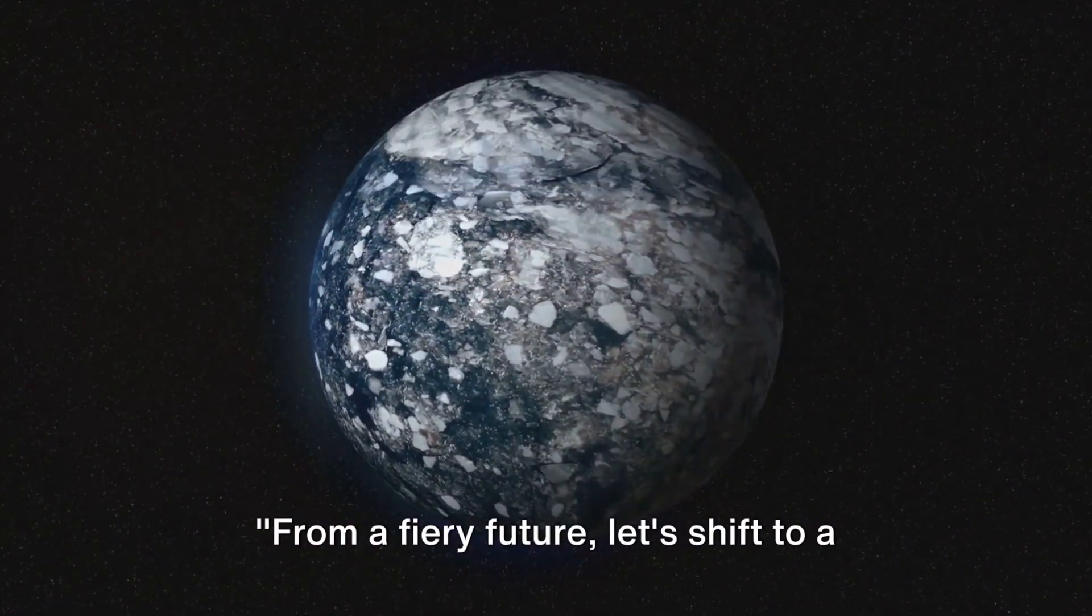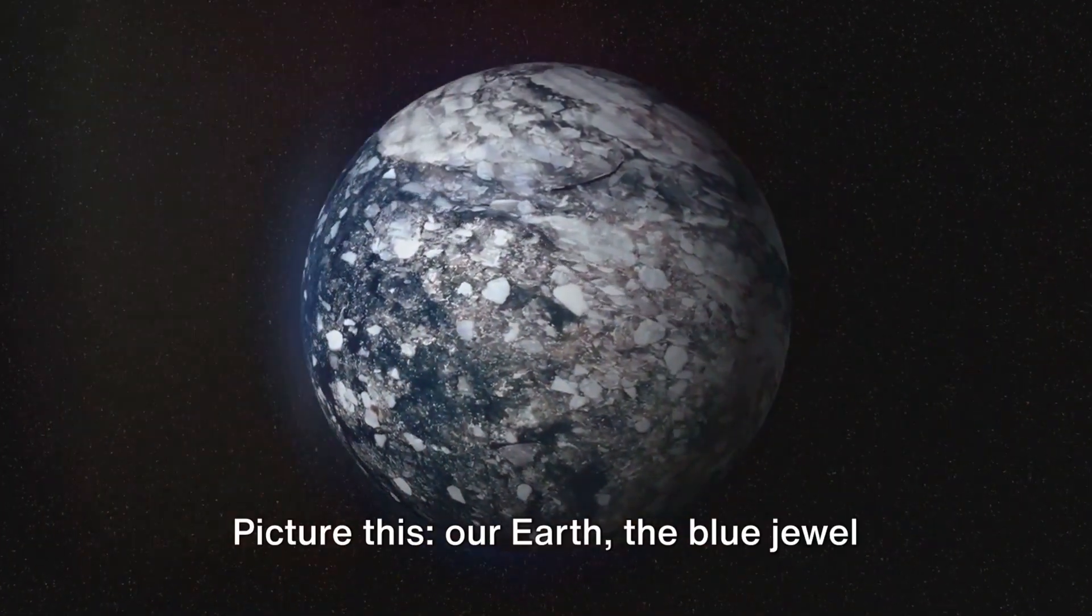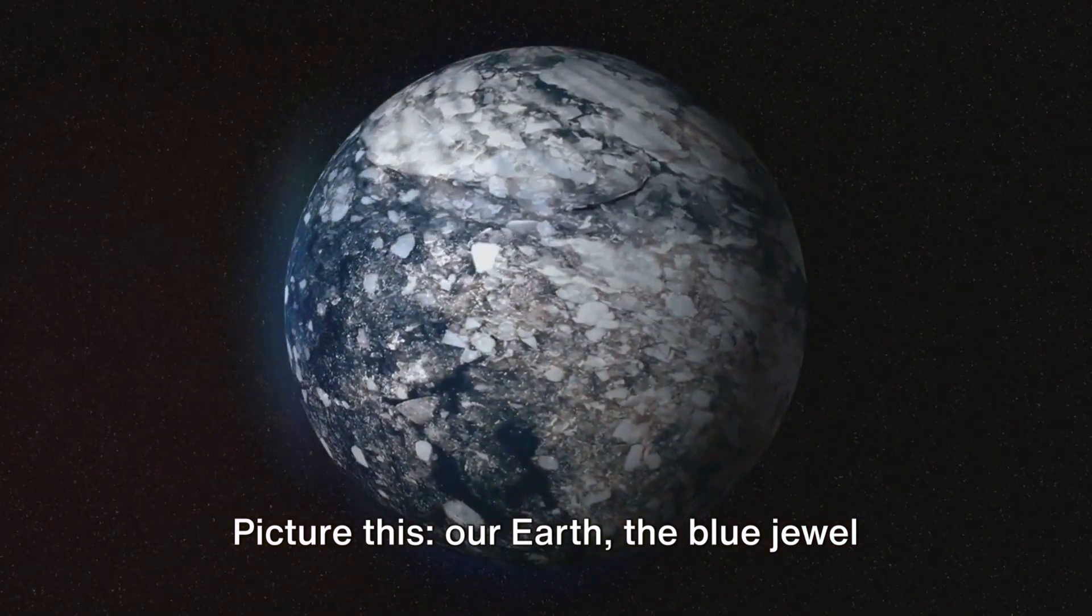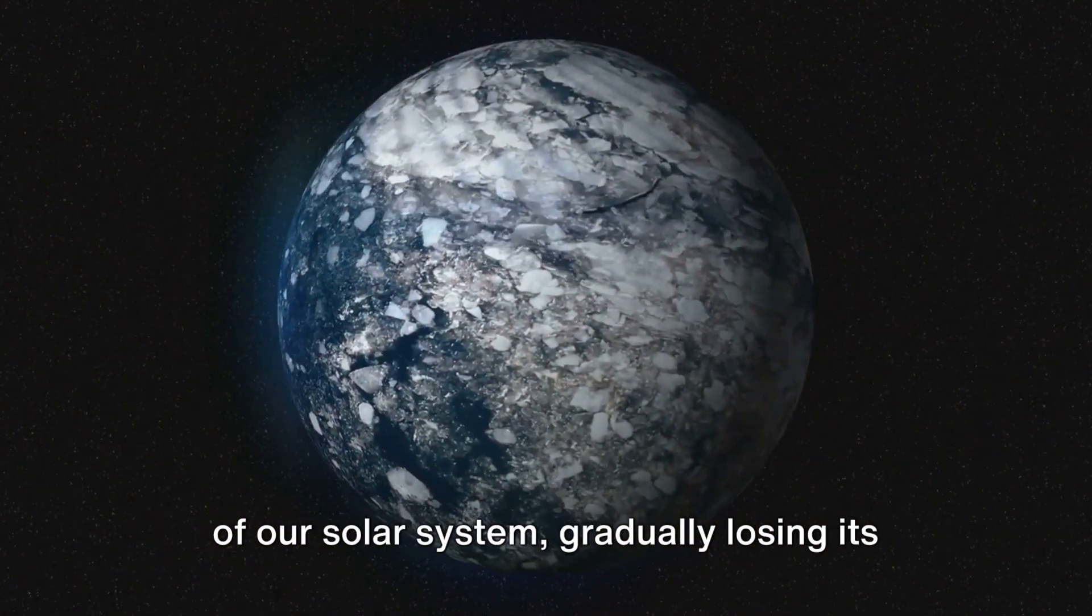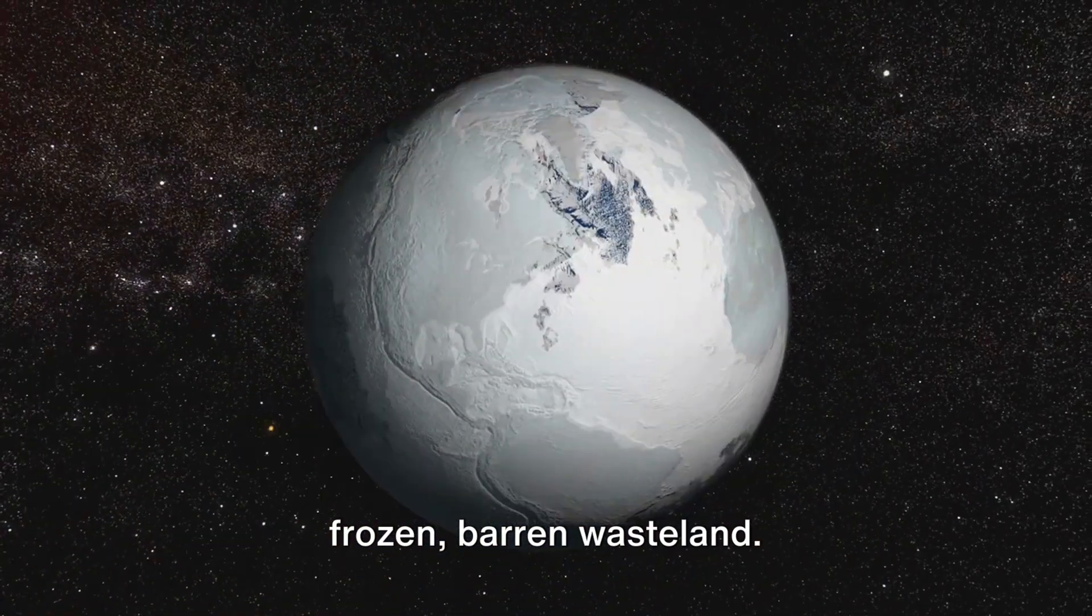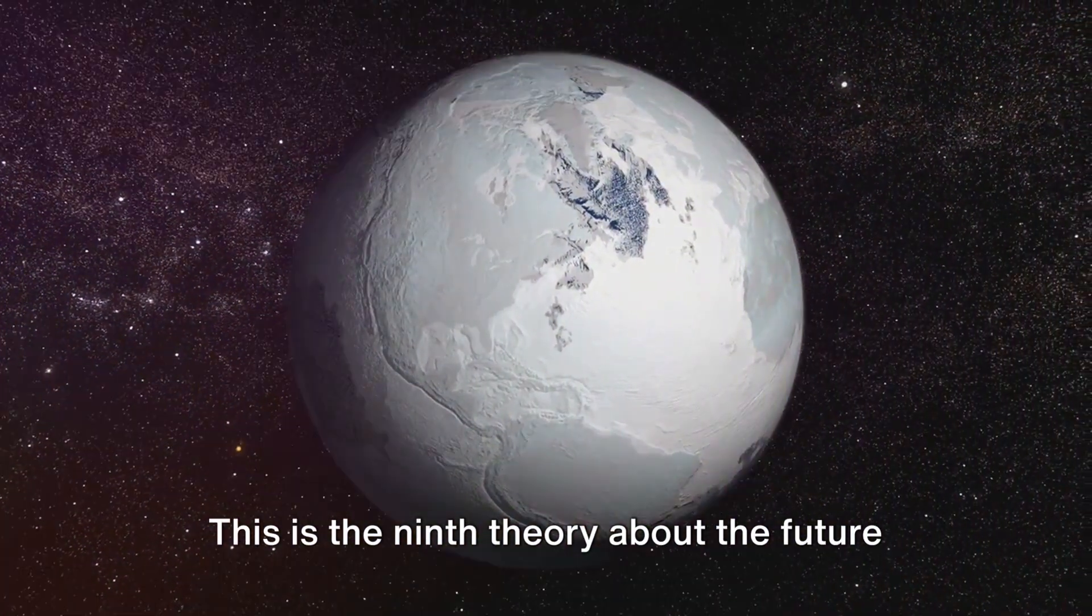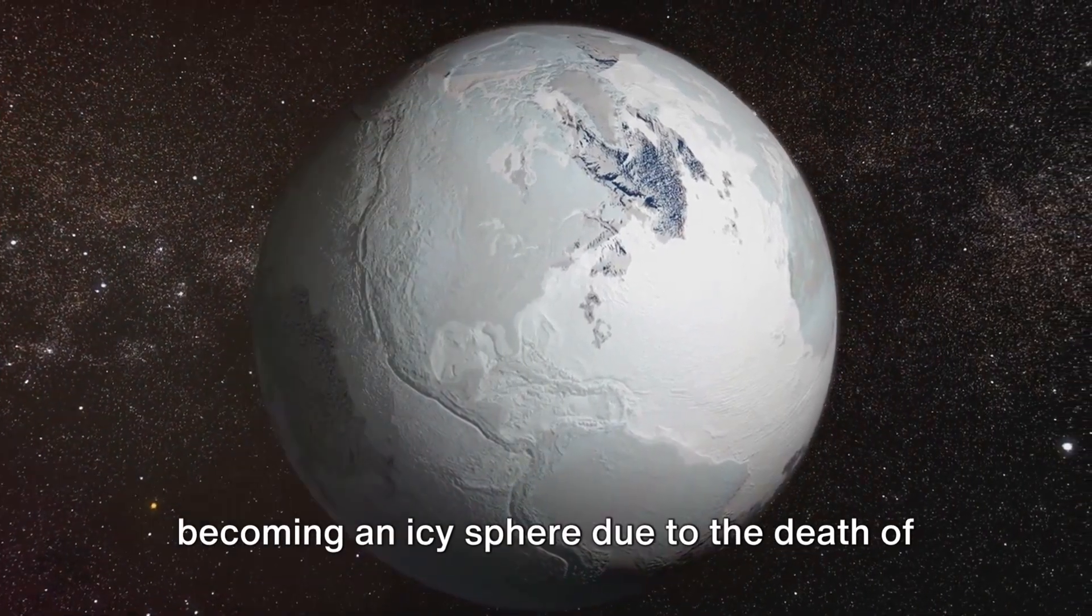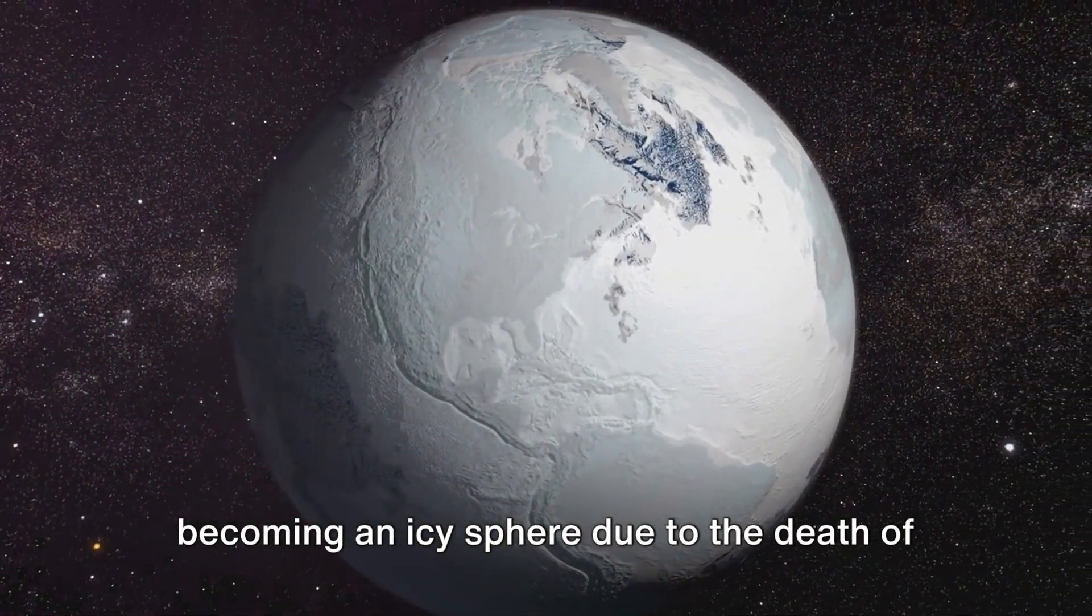From a fiery future, let's shift to a colder scenario. Picture this: Our Earth, the blue jewel of our solar system, gradually losing its warmth and color, transforming into a frozen, barren wasteland. This is the ninth theory about the future of our solar system, which predicts Earth becoming an icy sphere due to the death of our sun.